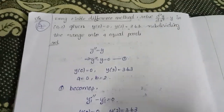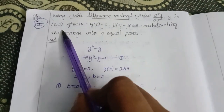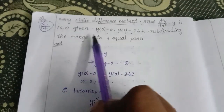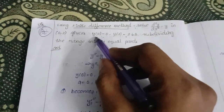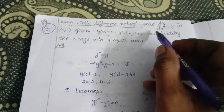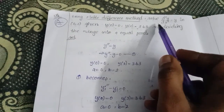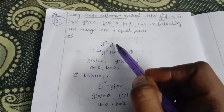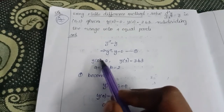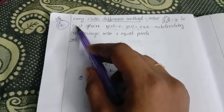We have to solve using the finite difference method: d²y/dx² = y on the interval [0, 2], given y(0) = 0 and y(2) = 3.63, subdividing the range into four equal parts. So n = 4, and the differential equation becomes y'' = y, or y'' - y = 0, with y(0) = 0 and y(2) = 3.63.